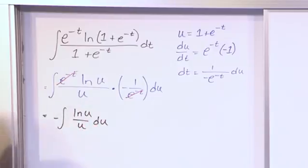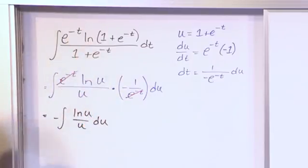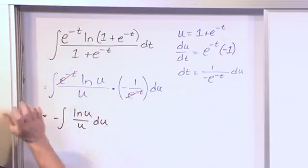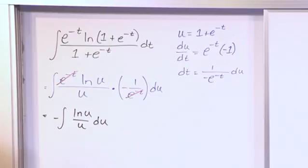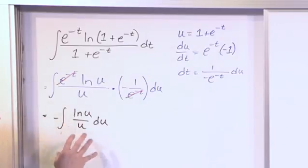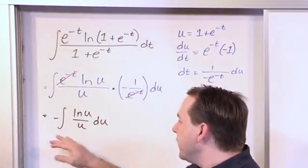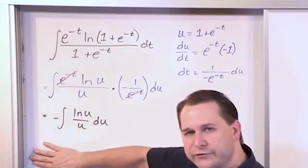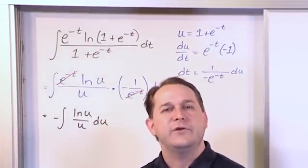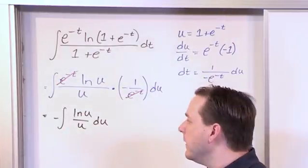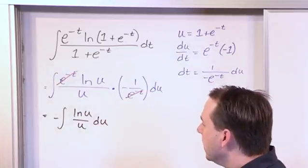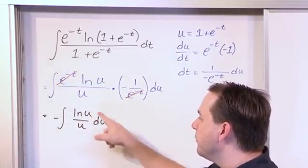But this actual integral — the natural log of u over u — we don't know how to solve right away. You might think you're stuck and go back to the drawing board, but as you start trying to choose other values for u, it's very difficult to find one that gives you a total slam dunk on the first try. What we notice is that we have a natural log on top and a u on the bottom. This is another integral — it's as if I gave it to you on a separate sheet of paper. What substitution would make that work? You would look at that and say you could try substituting a variable and setting it equal to the natural log.